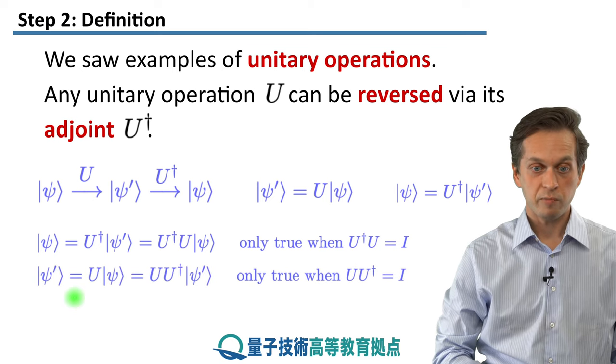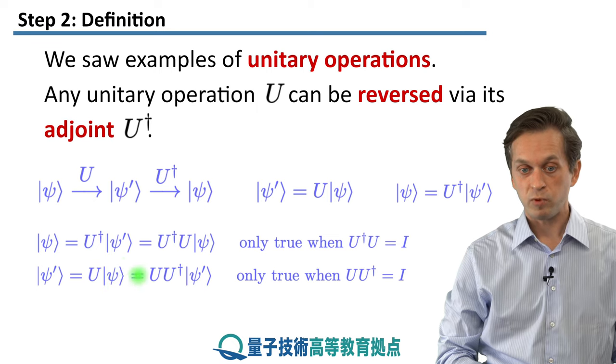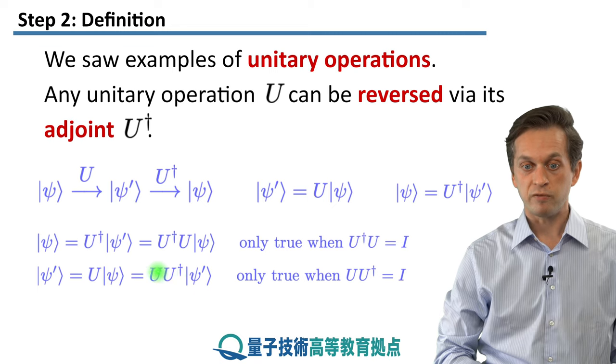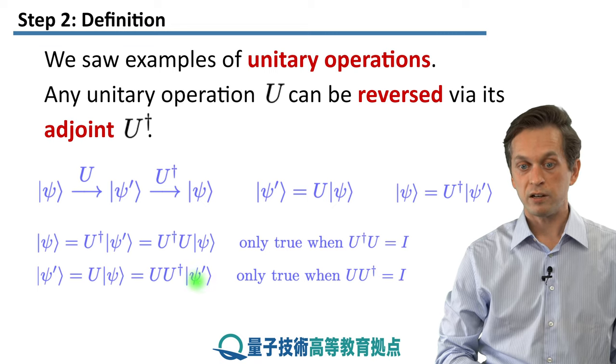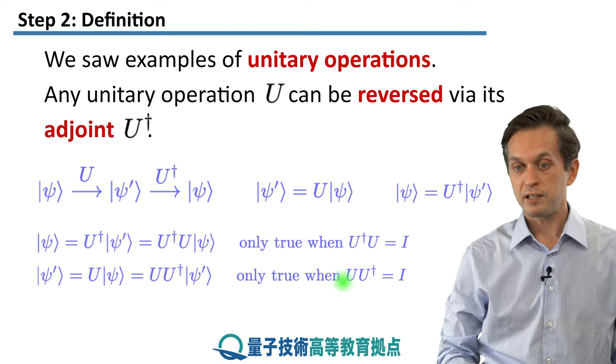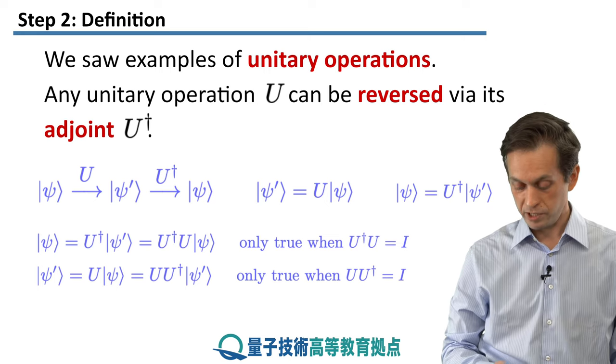Similarly, we can do it for ψ', which is equal to U applied to ψ. And again, we substitute for ψ this expression over here. And we get a similar expression as above: U times U† times the state ψ'. So from that we can see that also what needs to be true is that U times U† is equal to the identity operator.